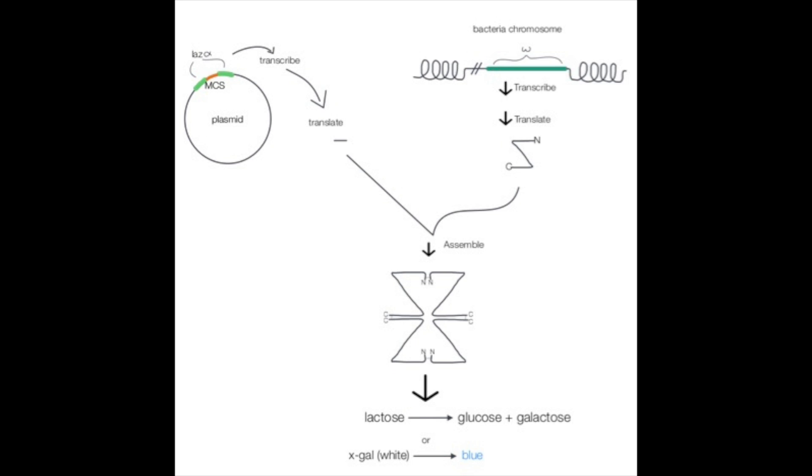Beta-galactosidase is encoded by the LAC-Z gene that can be inserted into cloning vectors. Thus, by performing assays such as the OMPG assay, you can measure the enzyme activity of beta-galactosidase, which is an indication for the success of your transfection method and thus of your cloning experiment.